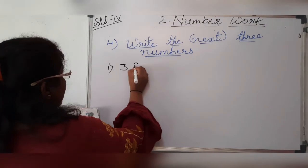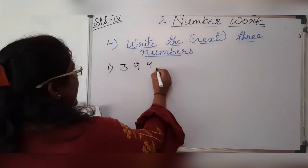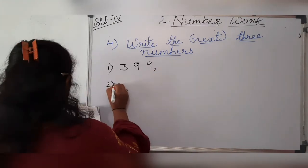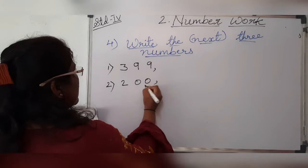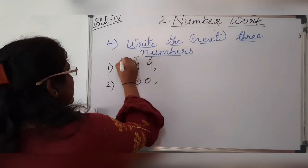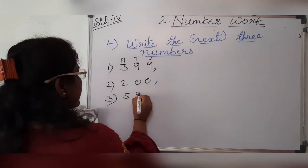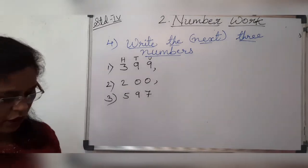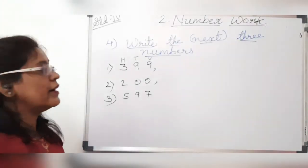It's a 3-digit number, my dear students. Three hundred and ninety-nine. You can read the number while writing — units, tens, and hundreds. Then the third number: five hundred and ninety-seven. These 3 numbers are given. Now you have to write the next 3 numbers, so we will put three dashes.